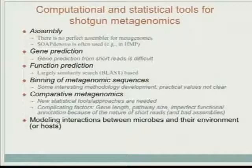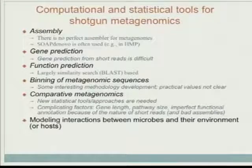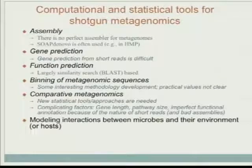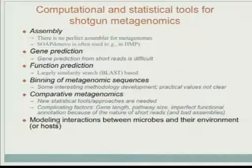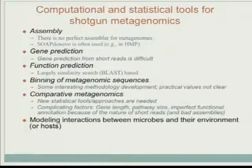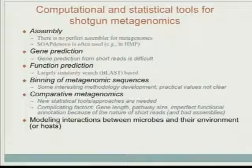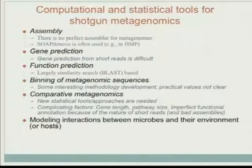Another topic is the binning of metagenomic sequences. The idea is that even though you may not be able to assemble individual genomes from a mixture of DNA, if you can cluster those reads from the same species into one cluster, you can do something from there. There are quite a few new methods for that purpose - to bin the metagenomic sequences, hopefully into species. But I think the practical value is not really clear, because in large metagenomic papers you don't really see binning being used in any significant way.